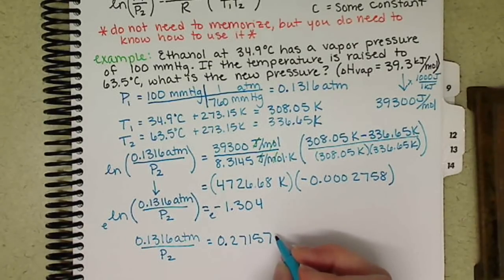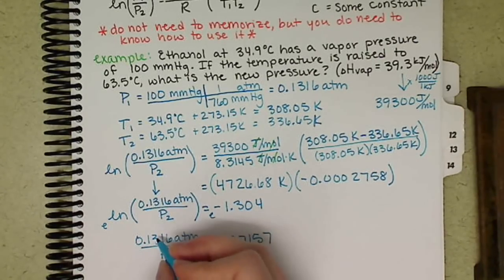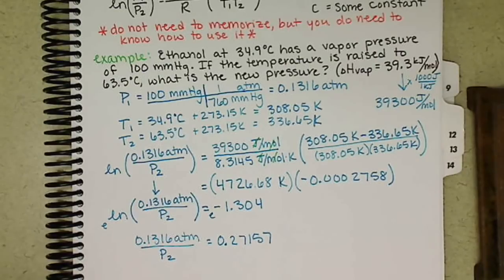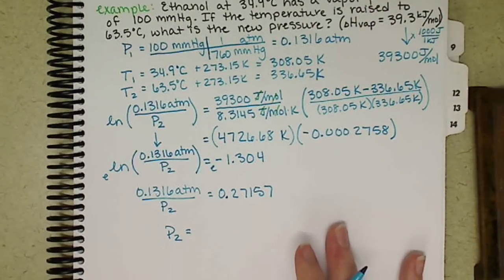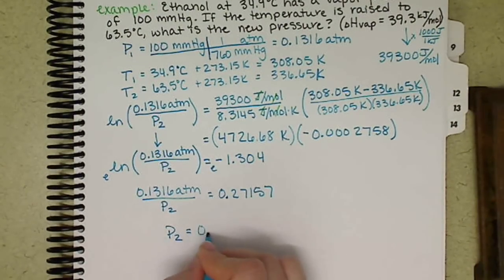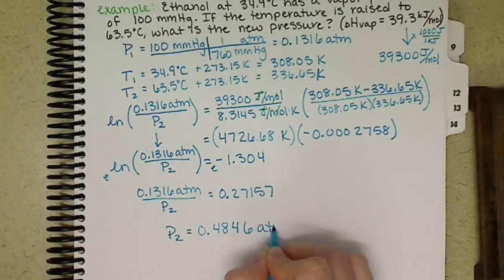Get my P2 on the right hand side, divide by 0.27157. So I have 0.1316 divided by 0.27157, and I end up with P2 is equal to 0.4846 atmospheres.